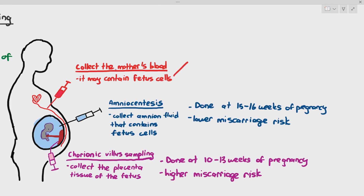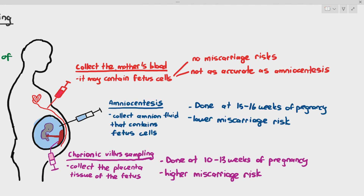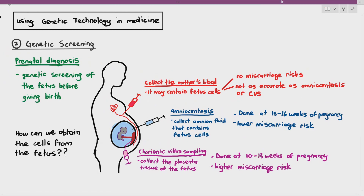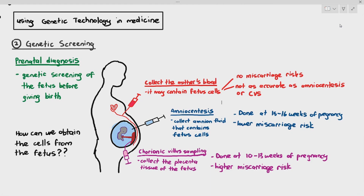That's a good thing because in this case you are not poking the amniotic sac directly and not disturbing the placenta, so there's no miscarriage risk. However, it comes with its own disadvantages. When you take the mother's blood, it may contain fetus cells, or even if it does contain fetus cells, they may be broken up and not have the correct number of chromosomes. So you cannot do a full genetic screening of the cells — it is not as accurate as amniocentesis or chorionic villus sampling (CVS). So these are some of the issues with this particular technique.